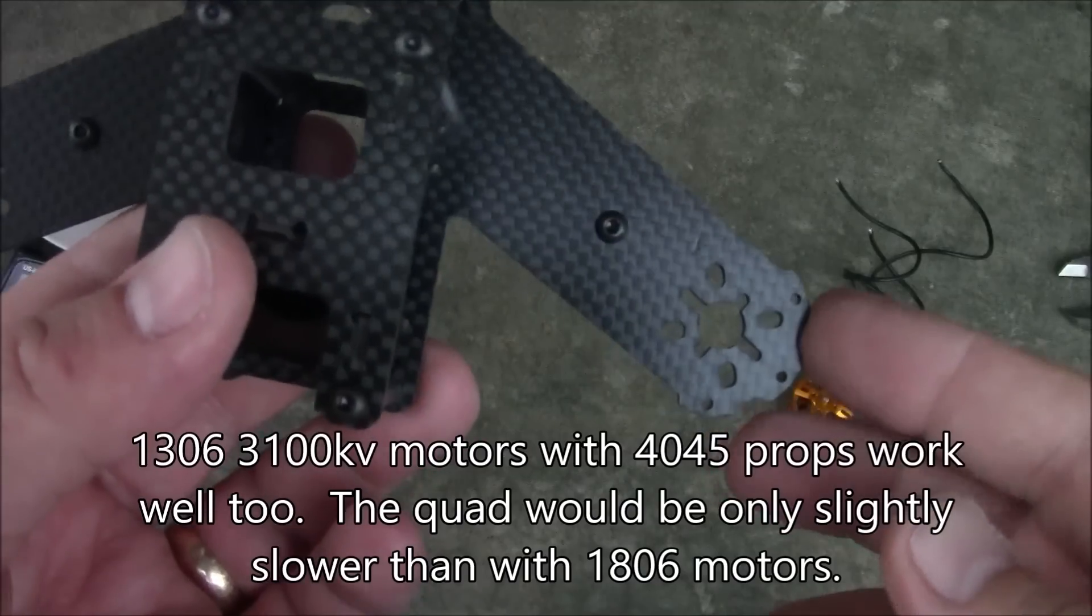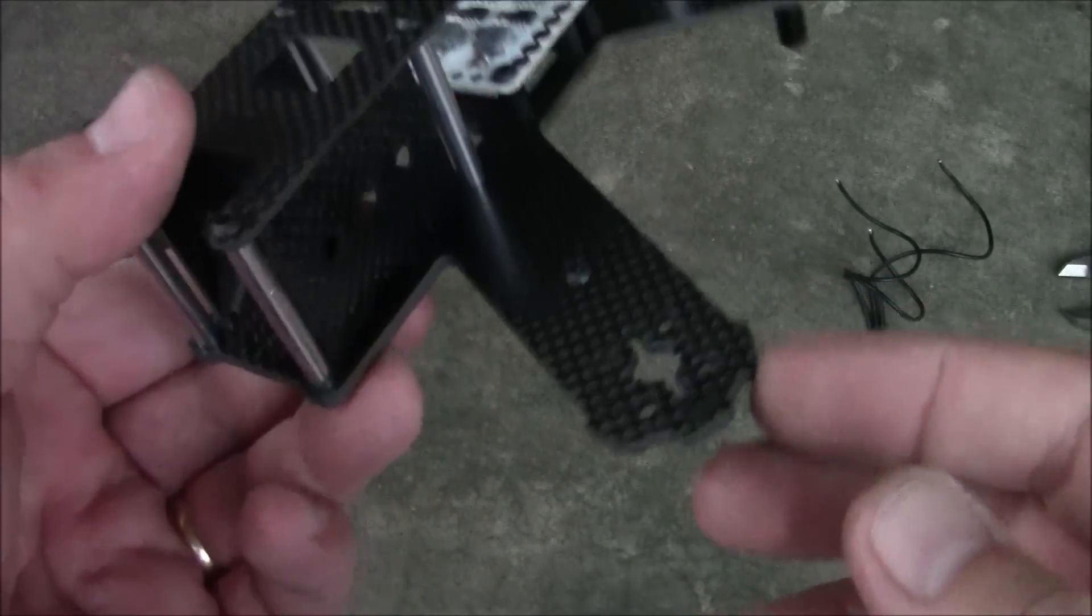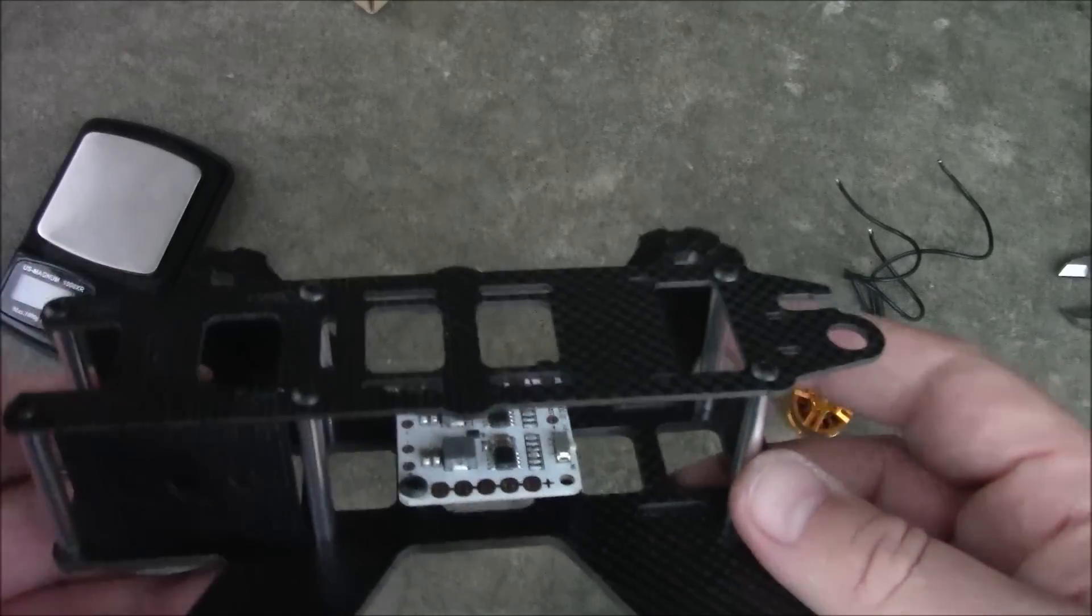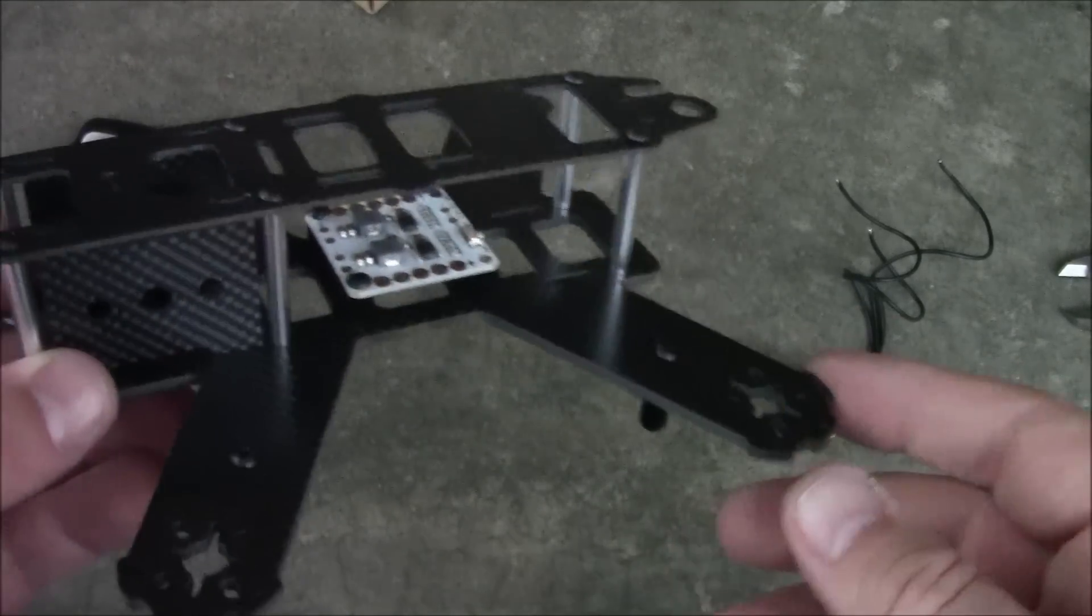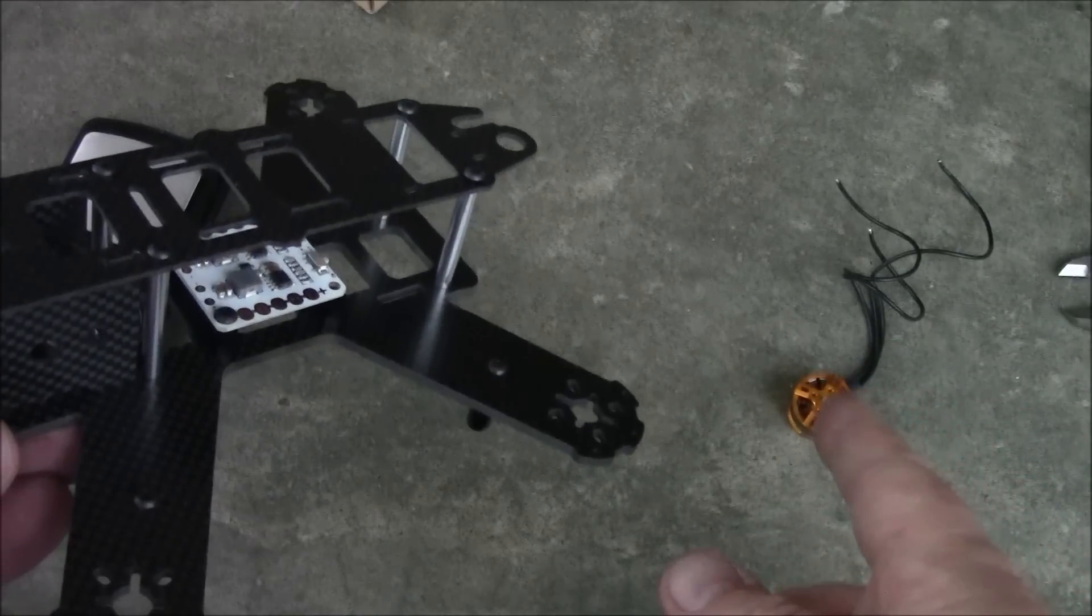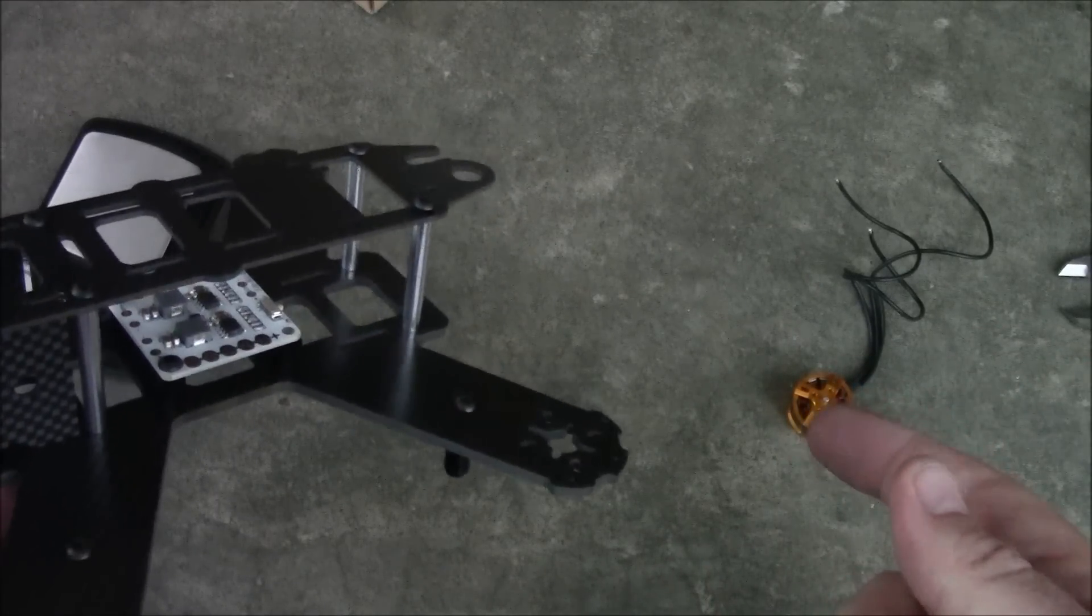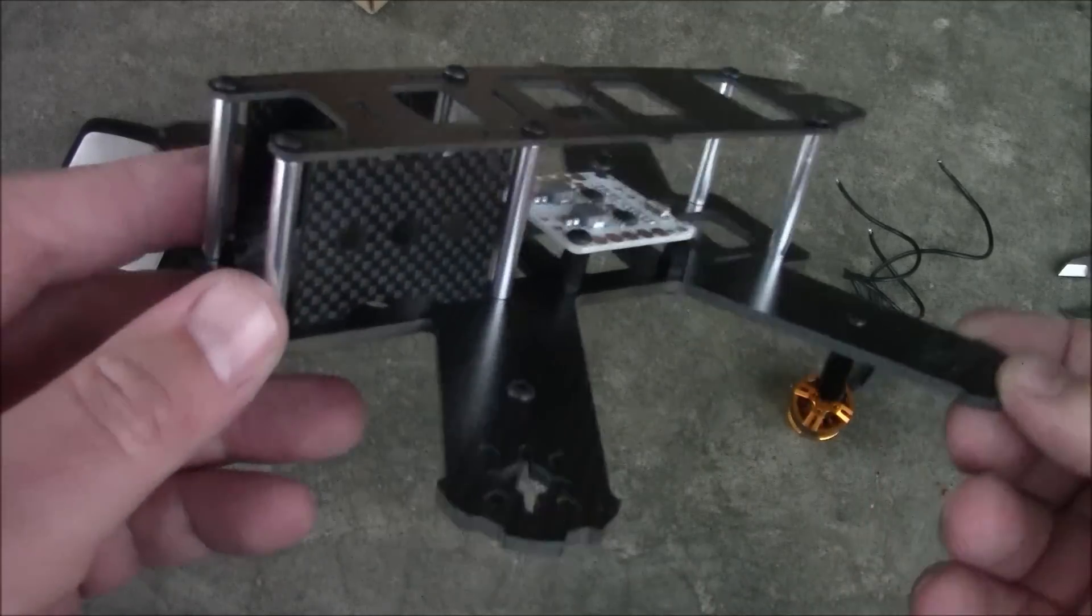Besides I have 1806 motors on my LS 210 and it does real well with the five inch propellers, but if I have to drop down to four inch propellers all I'm doing is losing an inch of propeller and so it's going to be a lot slower overall.